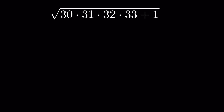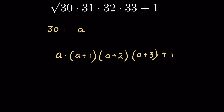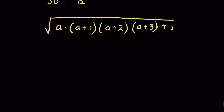We have to evaluate 30 times 31 times 32 times 33 plus 1 under square root without using a calculator. Let's consider 30 equals to a. Then we have a times 31, which we can write as a plus 1; 32 as a plus 2; 33 as a plus 3 — then plus 1 under square root.